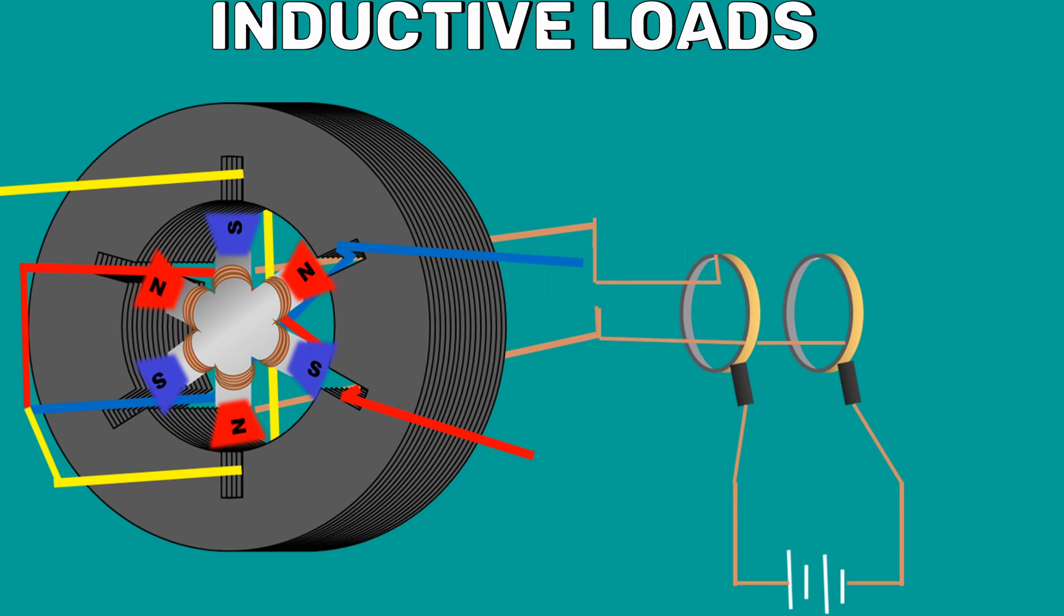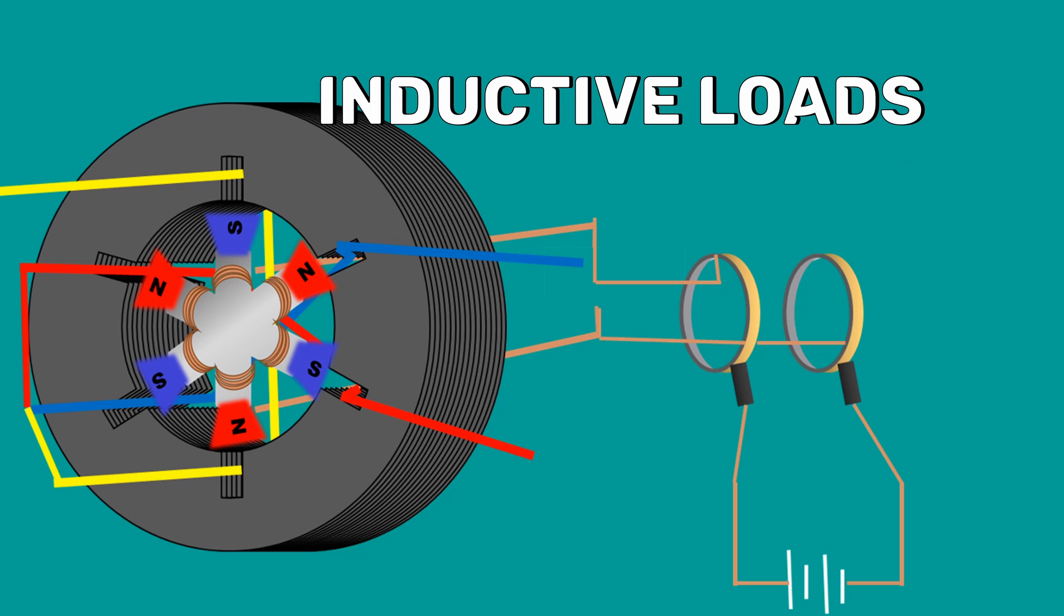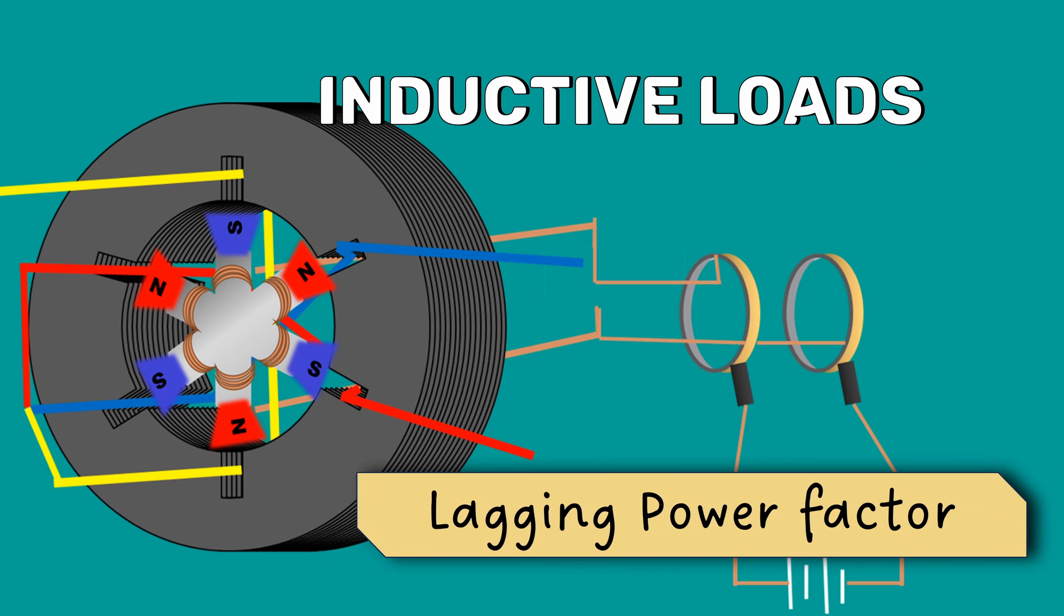Most of our electrical machines are inductive loads due to the presence of coils of wires. That's why we normally have a lagging power factor.